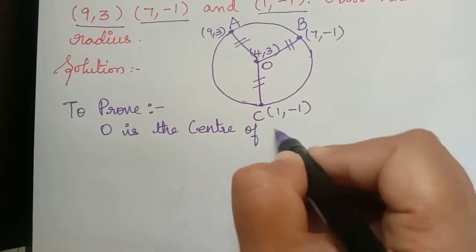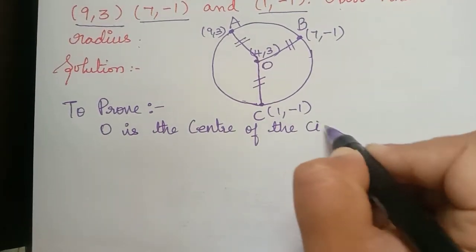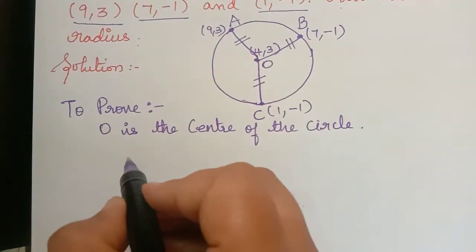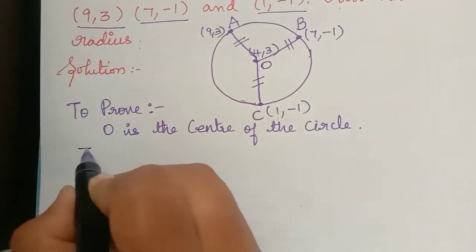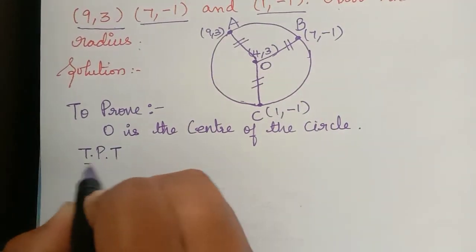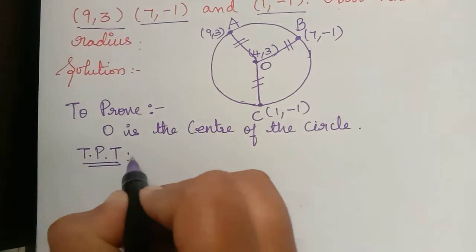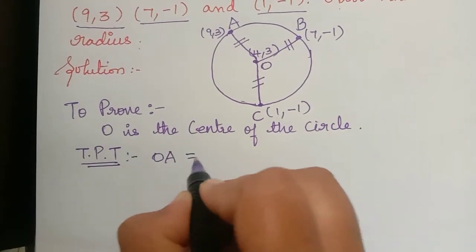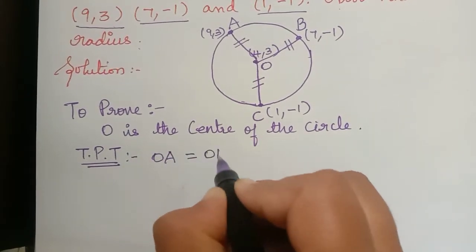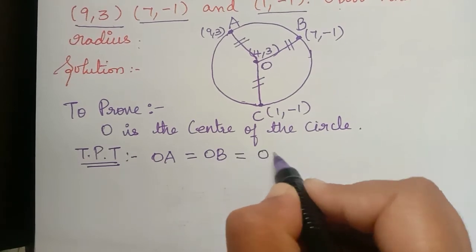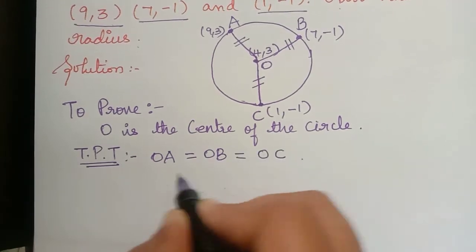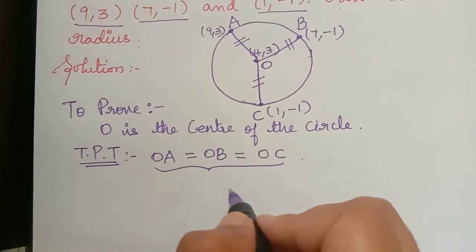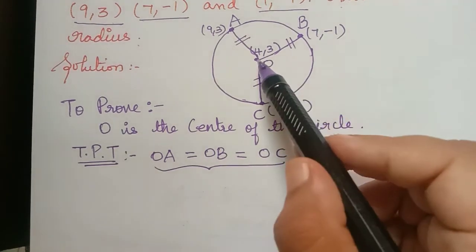Let us name the points: this is point A, this is point B, this is point C, and let us consider the center to be O. In order to prove that O is the center of the circle, we have to prove that OA is equal to OB is equal to OC — that these three distances are equal to one another.